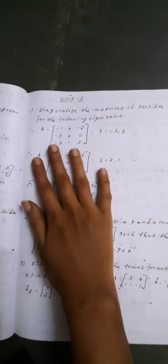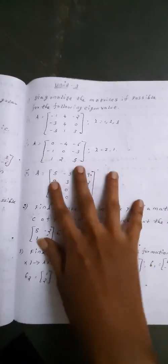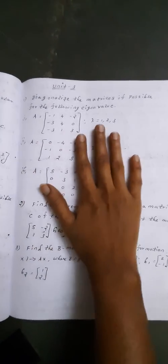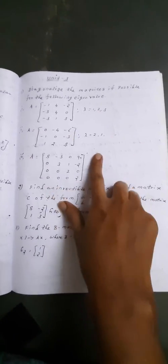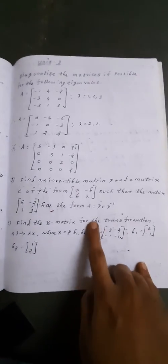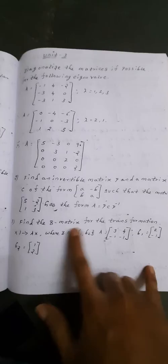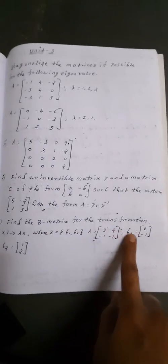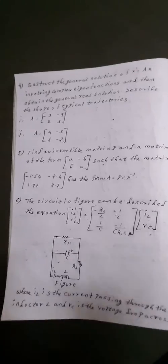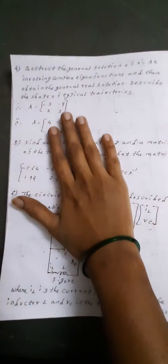Next we will go to third unit. In the third unit, diagonalize the matrix and find lambda values. Next, find the invertible matrix. Next, find the B matrix. These are the important questions in the third unit.